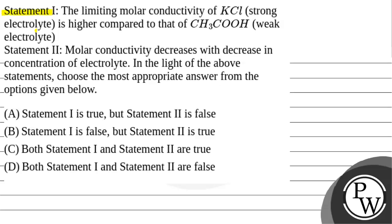Hello Bachcho, so let's read this question. Statement 1 is given to us as the limiting molar conductivity of KCl, which is a strong electrolyte, is higher compared to that of CH3COOH, which is a weak electrolyte. Statement 2 is given to us as molar conductivity decreases with decrease in concentration of electrolyte. We need to choose the most appropriate answer.